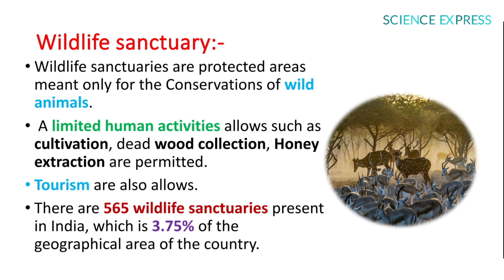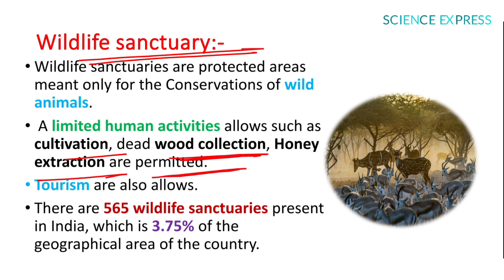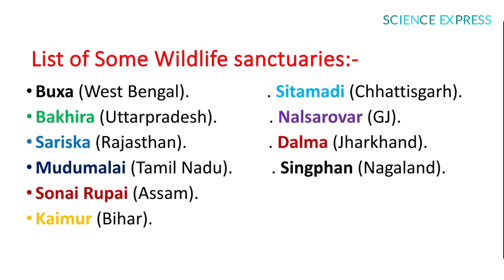Wildlife Sanctuaries are protected areas meant only for the conservation of wildlife. Limited human activities are allowed such as cultivation, deadwood collection, honey extraction, and sometimes tourism. There are 565 wildlife sanctuaries in India, covering 3.75% of the country's geographical area. National Parks are highly restricted, but some activities are permitted in wildlife sanctuaries.